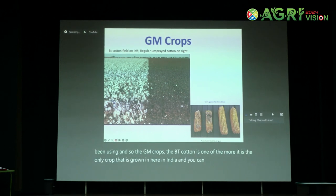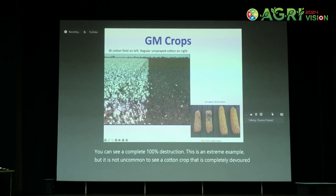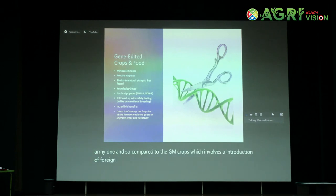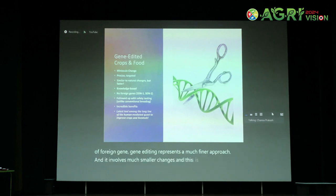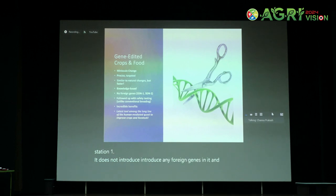On a cotton crop that is unsprayed, you can see complete 100% destruction. It's not uncommon to see a cotton crop that is completely devoured by a boll worm. But on the left, you see the GM or BT cotton and how it protects. A similar example with corn against the fall army worm. Compared to GM crops which involve an introduction of a foreign gene, gene editing represents a much finer approach involving much smaller changes. It is very precise, very targeted, and under the STN1 and STN2 techniques, it does not introduce any foreign genes. So gene editing is very similar to classical mutagenesis.